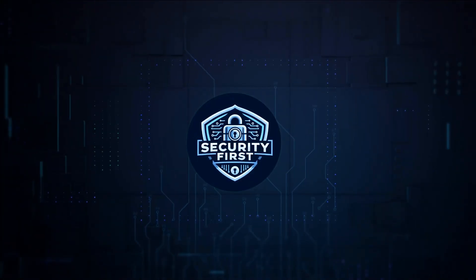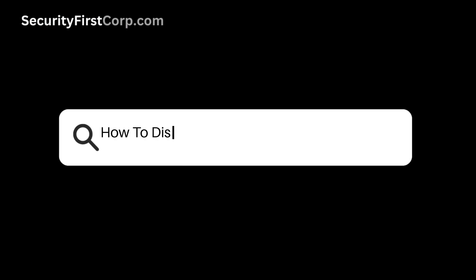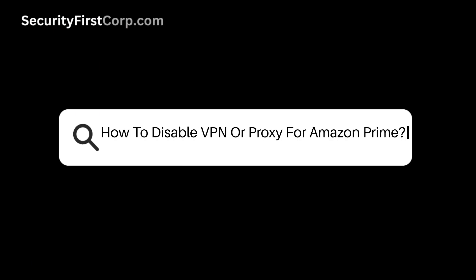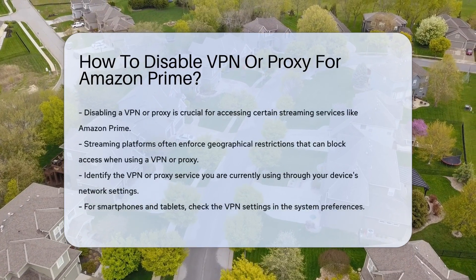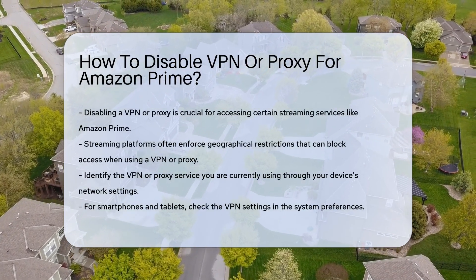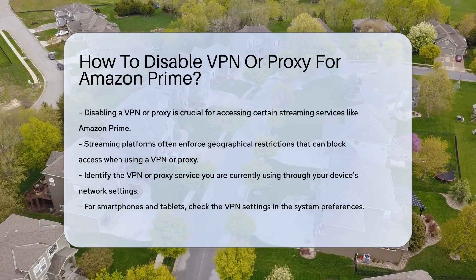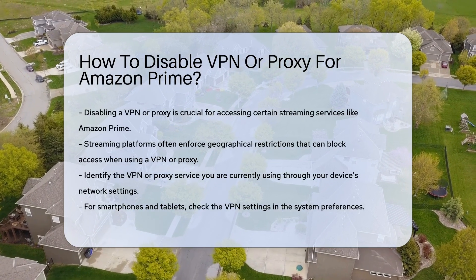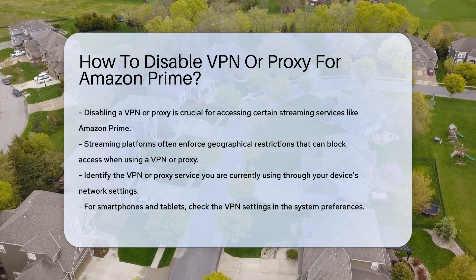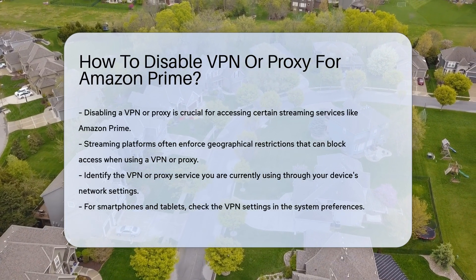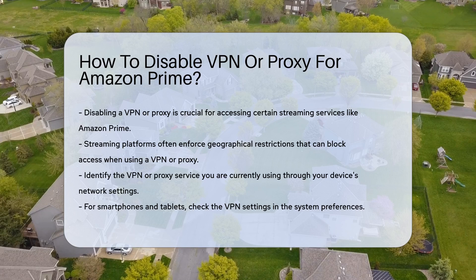Security First Corp. — Safety through knowledge. How to disable VPN or proxy for Amazon Prime. Disabling a VPN or proxy is essential for accessing certain streaming services. Many platforms enforce geographical restrictions, which can lead to access issues when using a VPN or proxy.